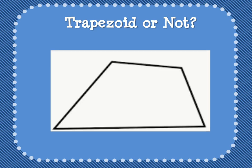Is this a trapezoid or not? Hopefully you said this is not a trapezoid because there are no parallel sides. These two sides are not parallel. If we look here, these aren't parallel either — the one on the bottom goes up slightly and the one on the top goes down slightly, and eventually they would cross. So this is not a trapezoid because no sides are parallel.